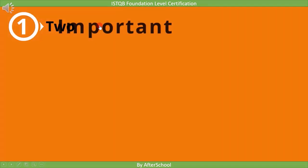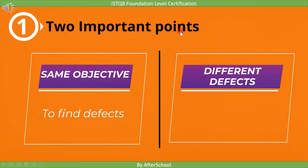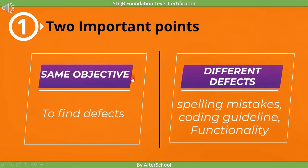When comparing static and dynamic testing, there are two important points. First, both have the same objective — finding defects. Second, different testing finds different types of defects. For example, during static testing we can find spelling mistakes and violations of coding guidelines, which we cannot find during dynamic testing. During dynamic testing we can find defects related to functionality which we may not find during static testing. So objectives are the same, but they find different defects.